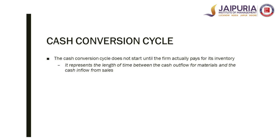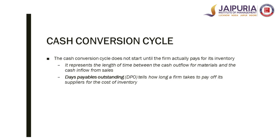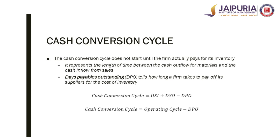The cash conversion cycle also incorporates Days Payables Outstanding (DPO) — the credit we avail from suppliers. It does not start until the firm actually pays for its inventories. It represents the length of time between cash outflow for materials and cash inflow from sales. DPO tells how long a firm takes to pay off its suppliers. The formula for cash conversion cycle is: DSI plus DSO minus DPO. Lower the cash conversion cycle, better is the working capital management for a firm.